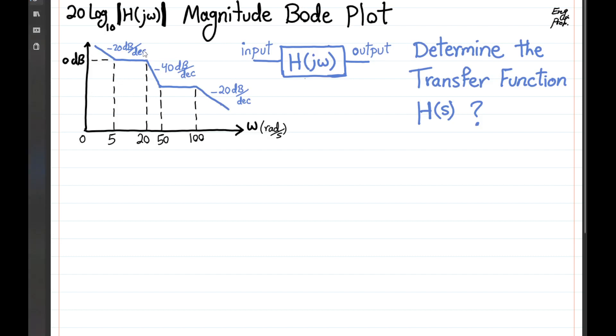The Bode magnitude plot of this LTI system, with a transfer function h of s, which has a frequency response h of j omega.